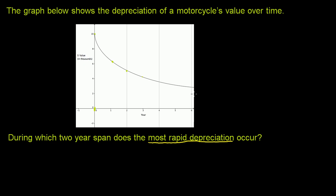And they're saying, when is the most rapid depreciation occurring? And they don't want to just know what year. They want a two-year span when we have the most rapid depreciation.